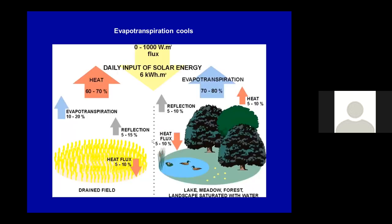If it is cloudy, we have substantially less — we measured for example 200 watts per square meter. So clouds regulate the amount of incoming solar energy. Now let's have a look at how it is with land cover.